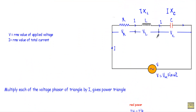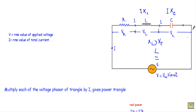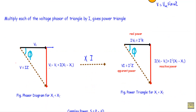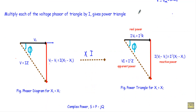There are three possible cases: first, XL greater than XC; second, XL less than XC; and third, XL equal to XC. We get the voltage triangle in the cases where XL is greater than XC or XL is less than XC.